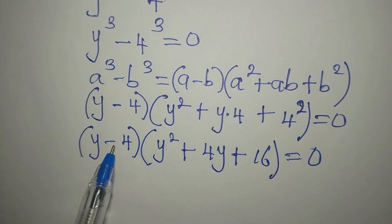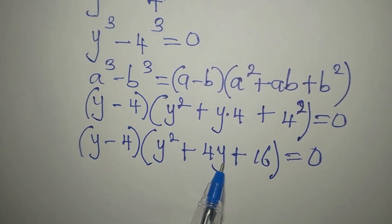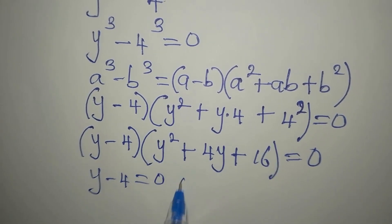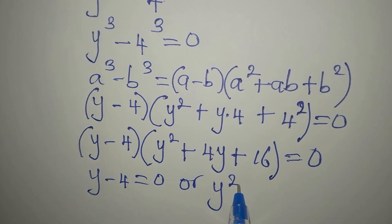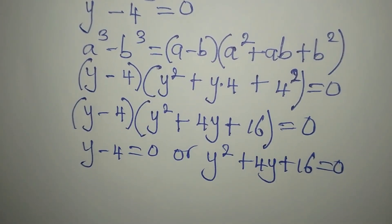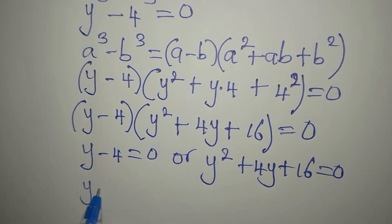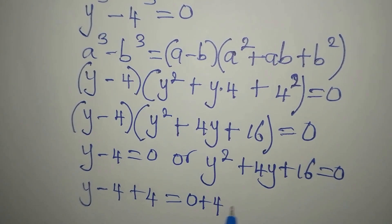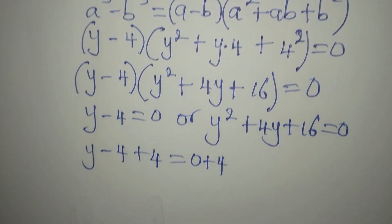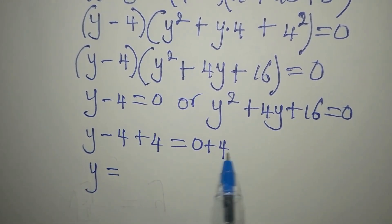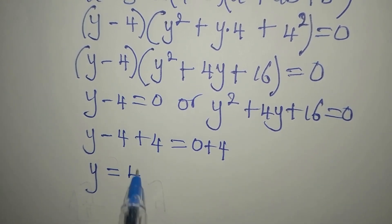Now since we are multiplying these two factors to get zero, one of them must equal zero. So it's either y minus 4 equals zero, or y squared plus 4y plus 16 equals zero. Taking the first factor: y minus 4 plus 4 equals zero plus 4. Minus 4 plus 4 cancels, so y equals 4. That is the first solution.